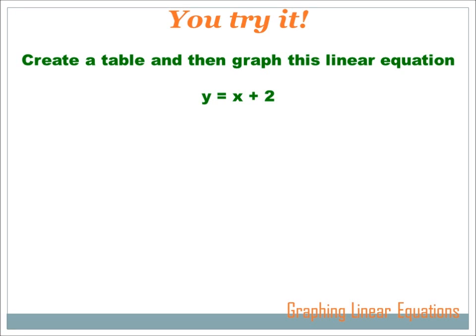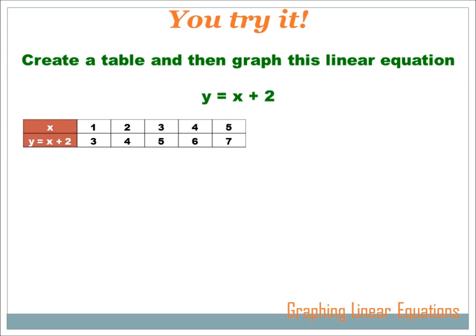How'd you do? Did you get it? Let's show you how I did it. The question is create a table and then graph this linear equation: y equals x plus 2. Well, the first thing we need to do is create a table. I had an x value row and then a y value row. And then I put in values for x: one, two, three, four, and five. For x equals one, I've got y equals x, which is one, plus two, so y equals three. For an x value of two, I got y equals two plus two, which is four. For an x value of three, I've got three plus two, or five, and so forth.